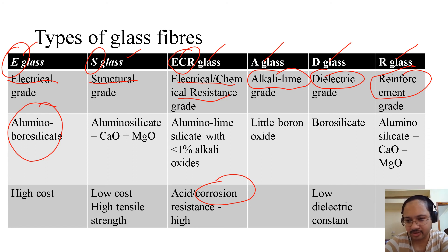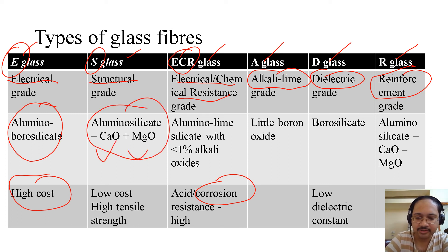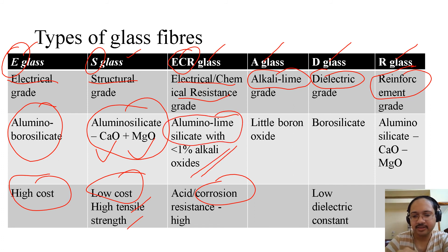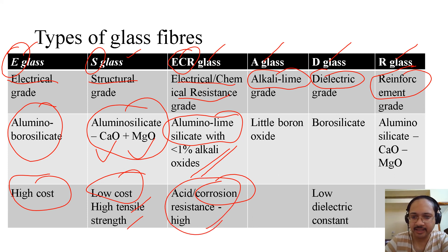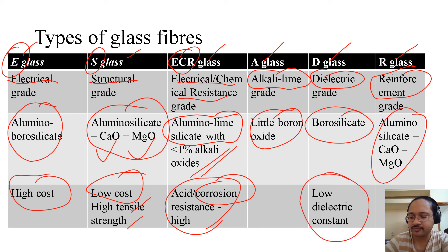E-glass is made of alumino-borosilicate — silica is the major ingredient — with alumina and borosilicate for electrical properties, though the cost is high. S-glass is alumino-silicate with calcium oxide and magnesium oxide; it is low cost but has high tensile strength. ECR is alumino-lime silicate with alkali oxides to increase corrosion resistance. D-glass is borosilicate for low dielectric constant. R-glass, the reinforcement grade, is again alumino-silicate with calcium oxide and magnesium oxide.